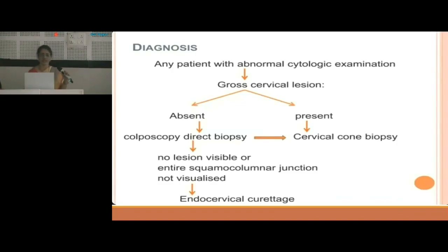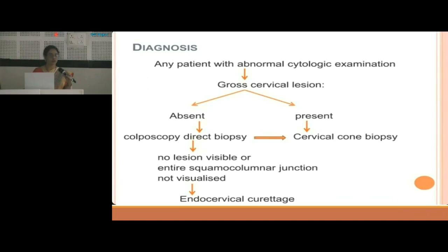For any patient with abnormal cytological examination, we search for a gross cervical lesion. If absent, we go for colposcopy and colposcopy-directed biopsy. If there is no visible lesion or the squamocolumnar junction could not be visualized, we go for endocervical curettage. If a gross cervical lesion is present, we directly go for cervical cone biopsy.